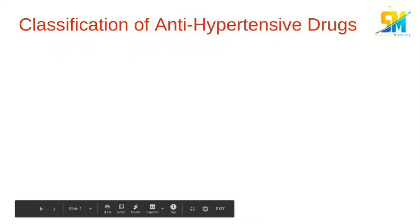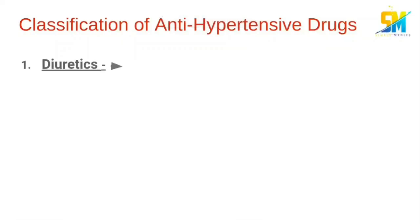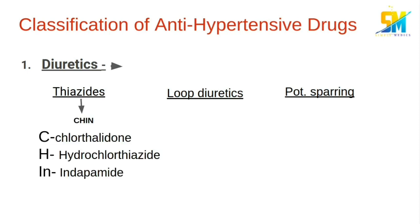The first category of antihypertensive drug is diuretics, which include thiazide, loop diuretics, and potassium-sparing drugs. We can remember the thiazides with the mnemonic GENE, that is chlorthalidone, hydrochlorothiazide, and indapamide.